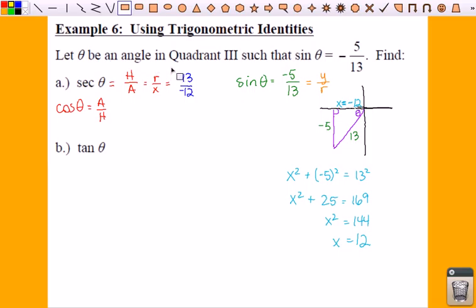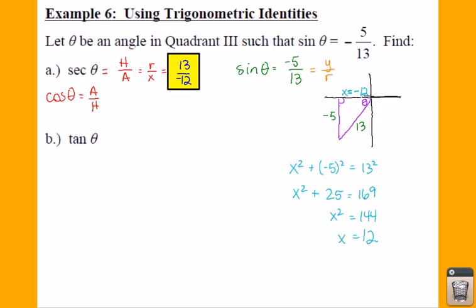We're going to have negative 13 over 12. Now to find our tangent of theta - TOA. Don't forget TOA. That is your opposite side over your adjacent, or you may remember as y over x. Your opposite side is your y, adjacent side is your x. We're going to take our y value, which is negative 5, and divide that by our x value. Negative 5 divided by negative 12 gives us a positive 5 twelfths.